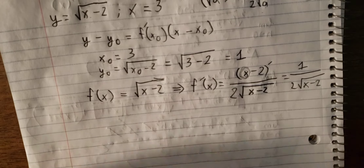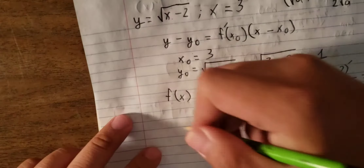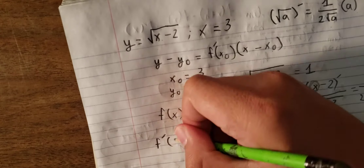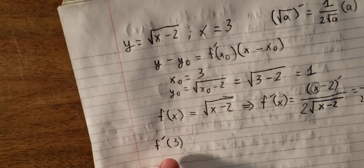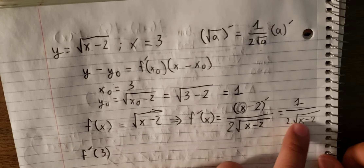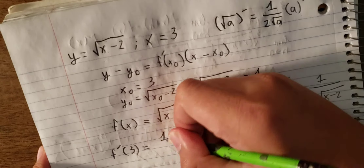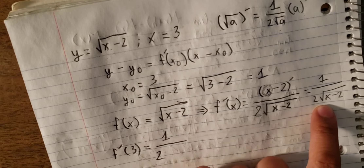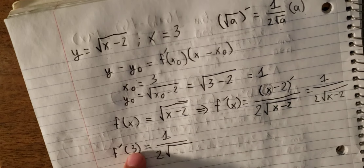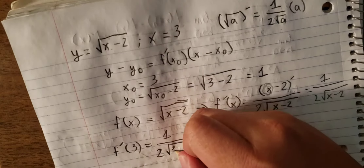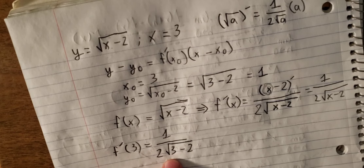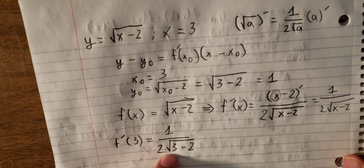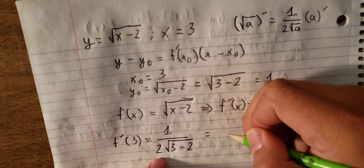The second step is to substitute s₀ equal to the number 3 into the first derivative. So we have the number 3, and we calculate: 1 over 2 multiplied by the square root of s minus 2, with s equal to 3. So 3 minus 2 is 1, the square root of 1 is still 1, and we have 1 over 2.